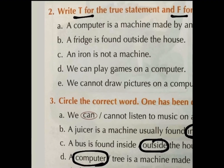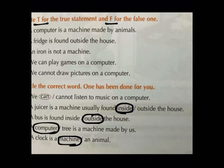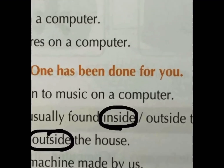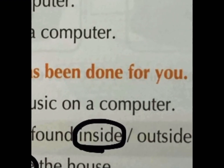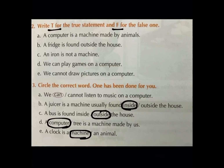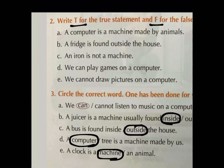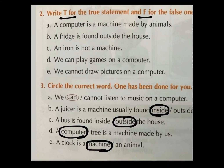A juicer is a machine usually found inside or outside the house? It is found inside the house. So, hum ne 'inside the house' ko circle kiya hai. Now, let us go to the next statement C: A bus is found inside or outside the house? Bus travels on road. Aur road kaan hoti hai? Ghar ke bahar. So, it means a bus is found outside the house. Outside ko hum circle karin ge.